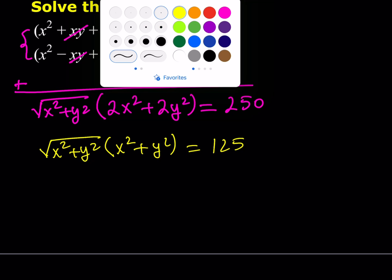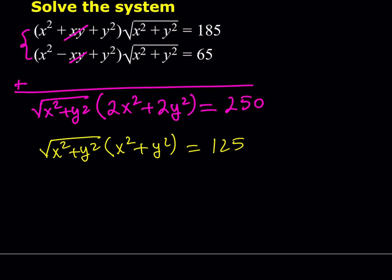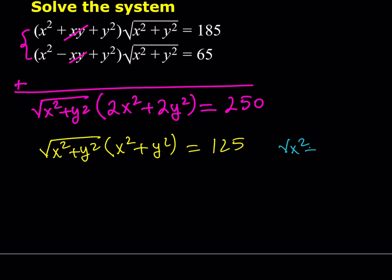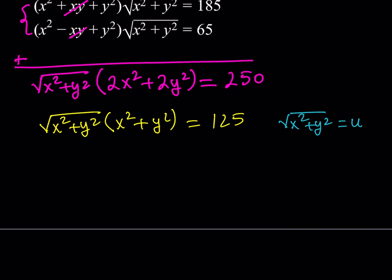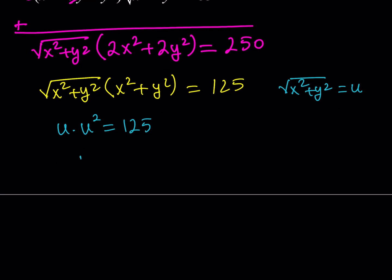What it means is that we can actually use substitution here. So let's make the substitution: let u equal the square root of x squared plus y squared. Then x squared plus y squared is u squared. So we have u times u squared equals 125, which means u cubed equals 125. With cubic equations, there's only one number whose cube equals a given value, unlike square roots. So we get u equals 5 — straightforward. It's a one-to-one function, a bijection.